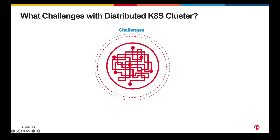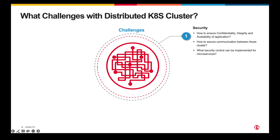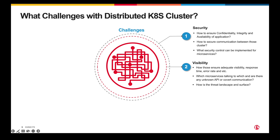All those reasons to use distributed Kubernetes clusters bring multiple challenges to organizations. Here are some common challenges shared by our customers. Security is paramount: how do you ensure confidentiality, integrity, and availability of applications with distributed Kubernetes clusters? How do you ensure communications between clusters are secure, and what security controls can be easily implemented without complex setup and pushback from application owners? With distributed cloud and distributed applications, how do you ensure adequate visibility — such as security posture, response time, error rate — and understand which microservices are talking to which, and whether there are any unknown or unauthorized communications?